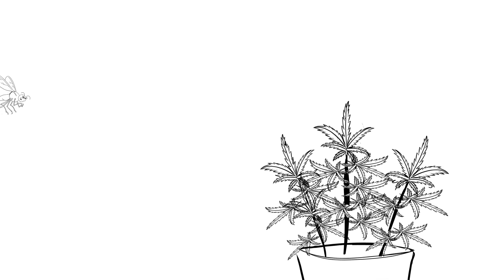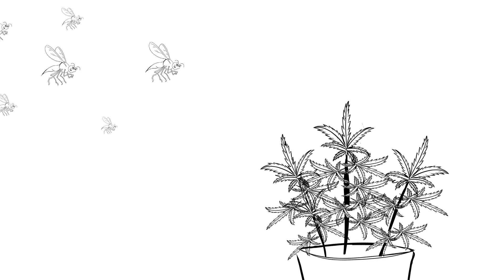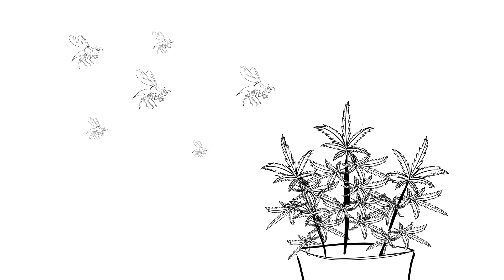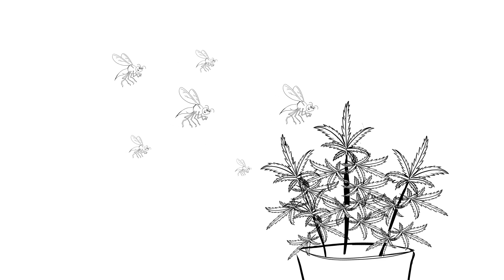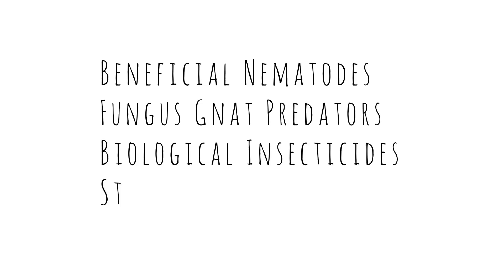Fungus gnats are a common pest on cannabis plants. Infestations of fungus gnats can damage roots and stunt plant growth. Integrated pest management practices can limit and control infestation levels. Arbico Organics' recommended plan includes the following: beneficial nematodes, fungus gnat predators, biological insecticides, and sticky traps.